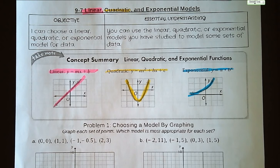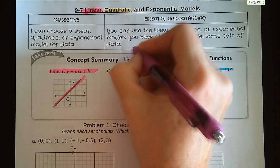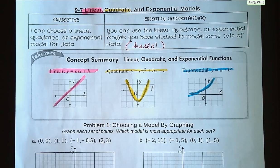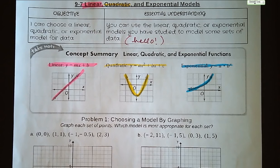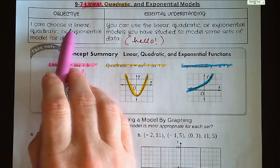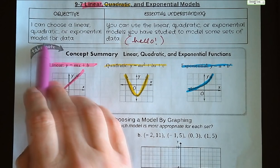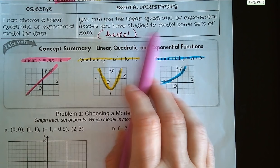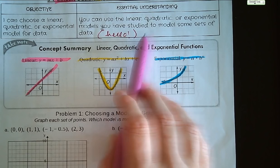Hi guys, welcome to lesson 9-7, Linear, Quadratic, and Exponential Models. Our objective for this lesson is that I can choose a linear, quadratic, or exponential model for data. Our essential understanding: you can use the linear, quadratic, or exponential models you have studied to model some sets of data.